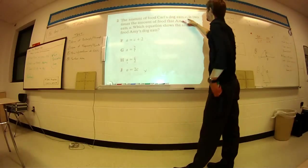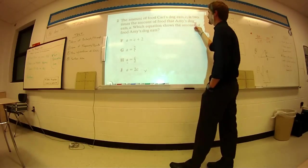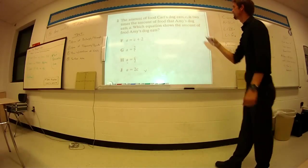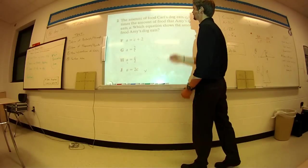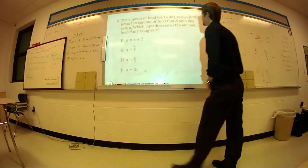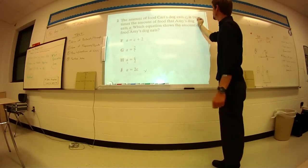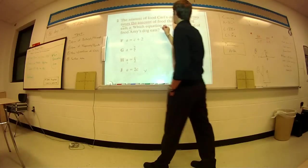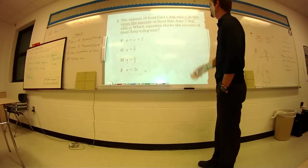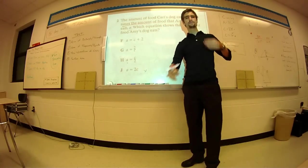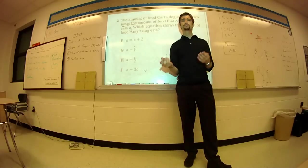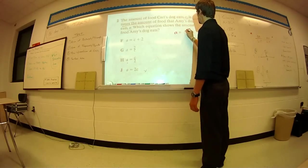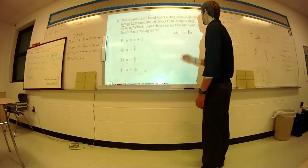The amount of food Carl's dog eats C is two times the amount of food that Amy's dog eats A, which equation shows the amount of food Amy's dog eats. So Carl's dog is C. Amy's dog is A. So Carl's dog eats two times the amount of food that Amy's dog eats. So the best way to do this, sometimes this confuses people. Let's use actual numbers.